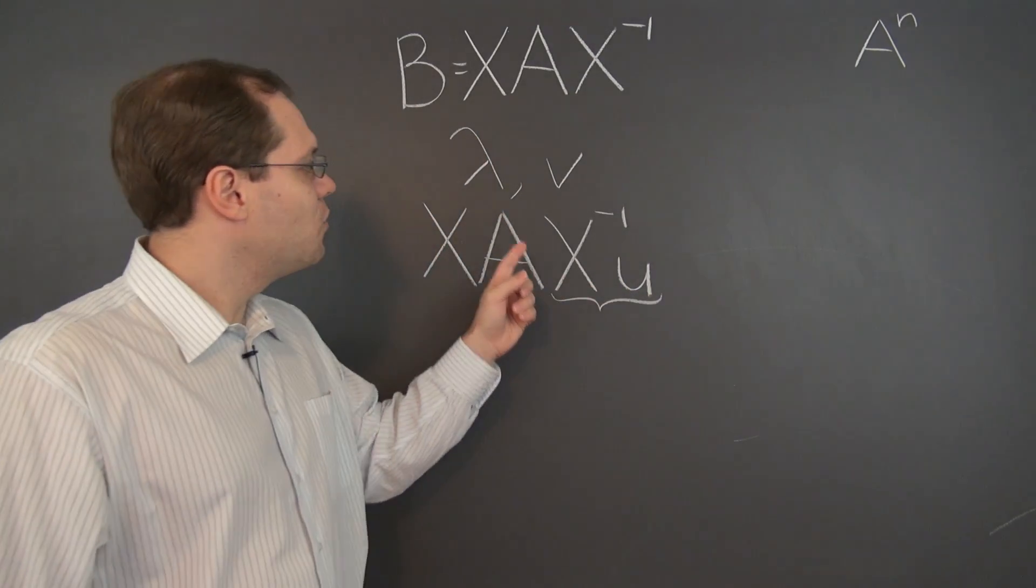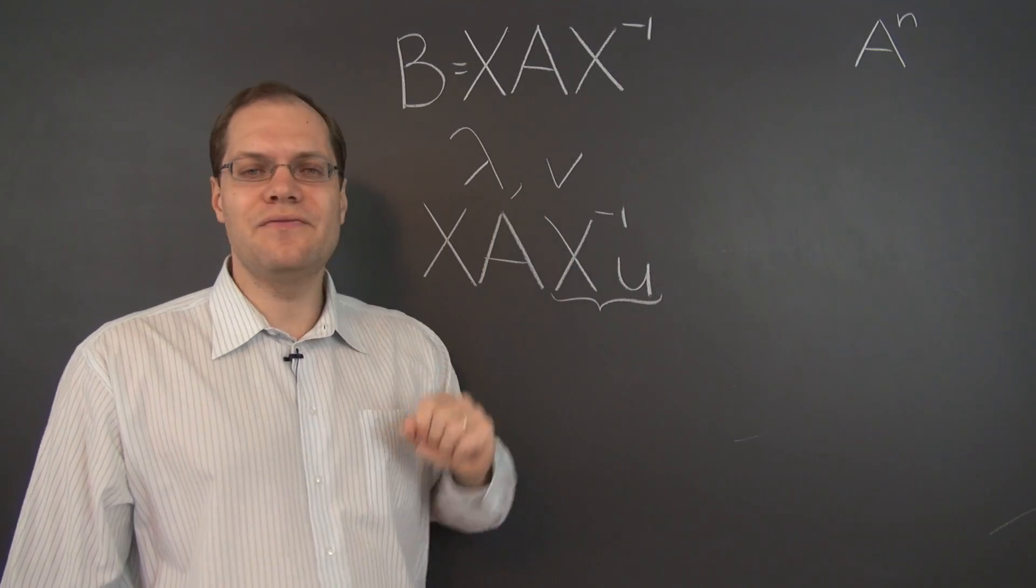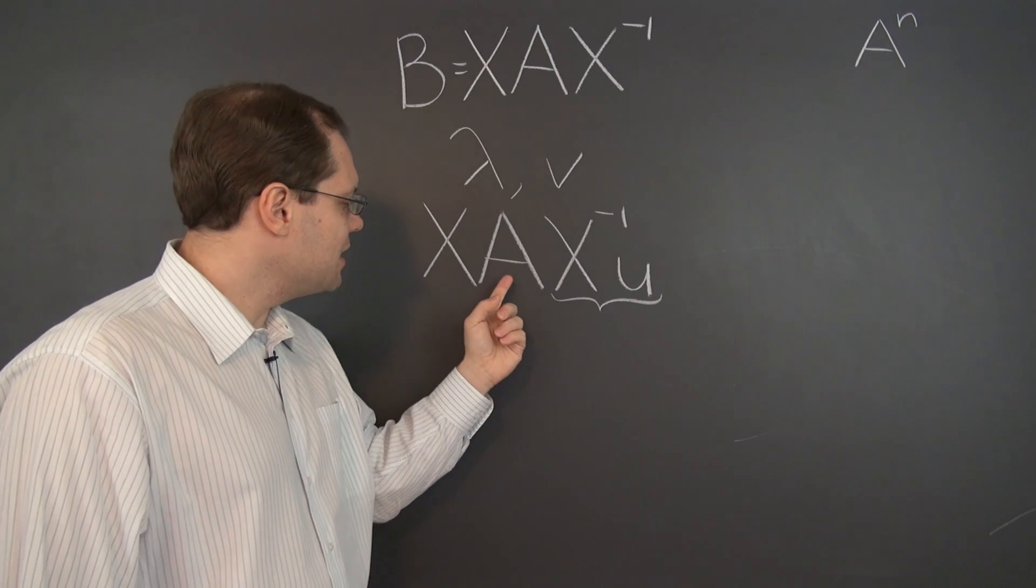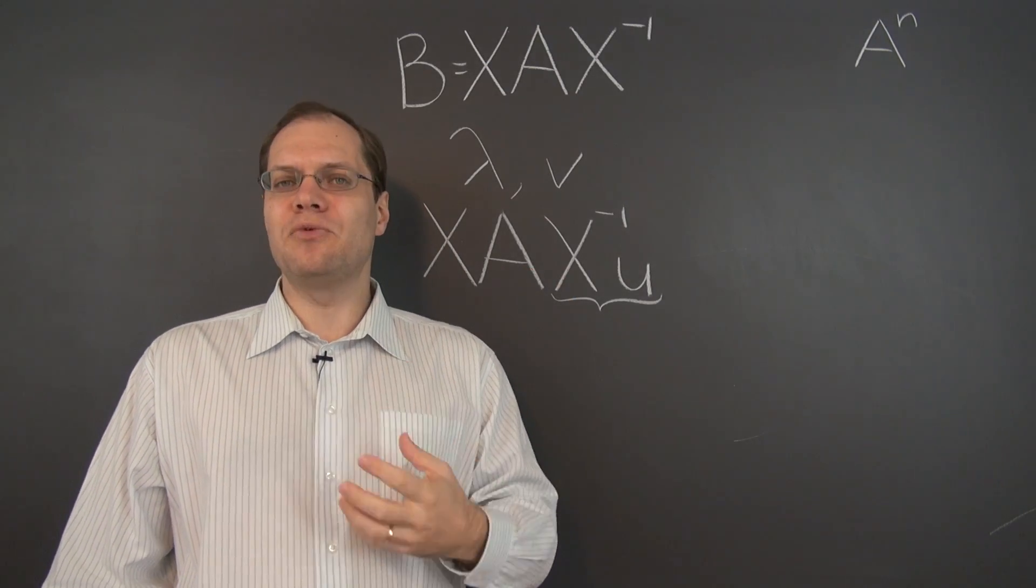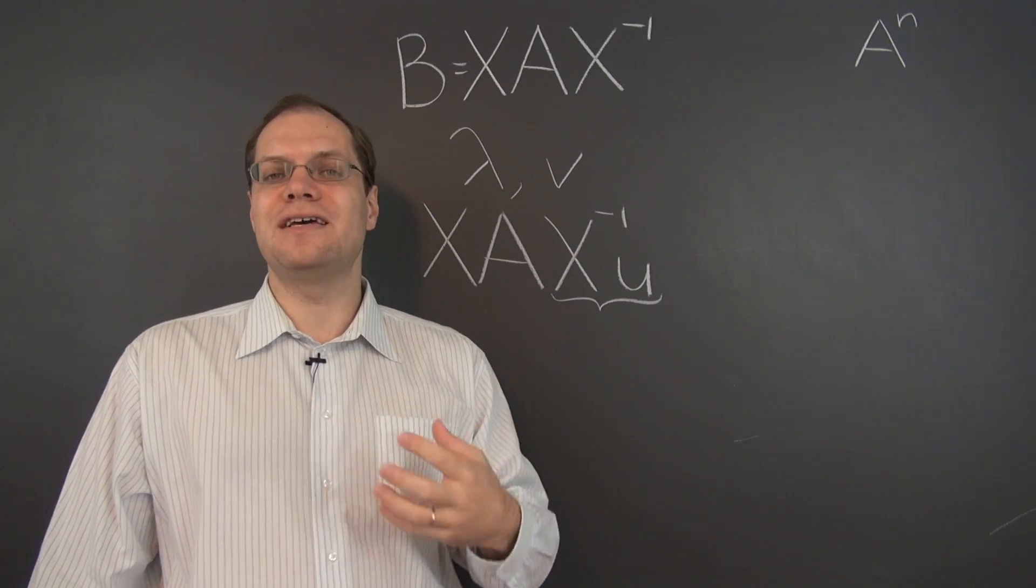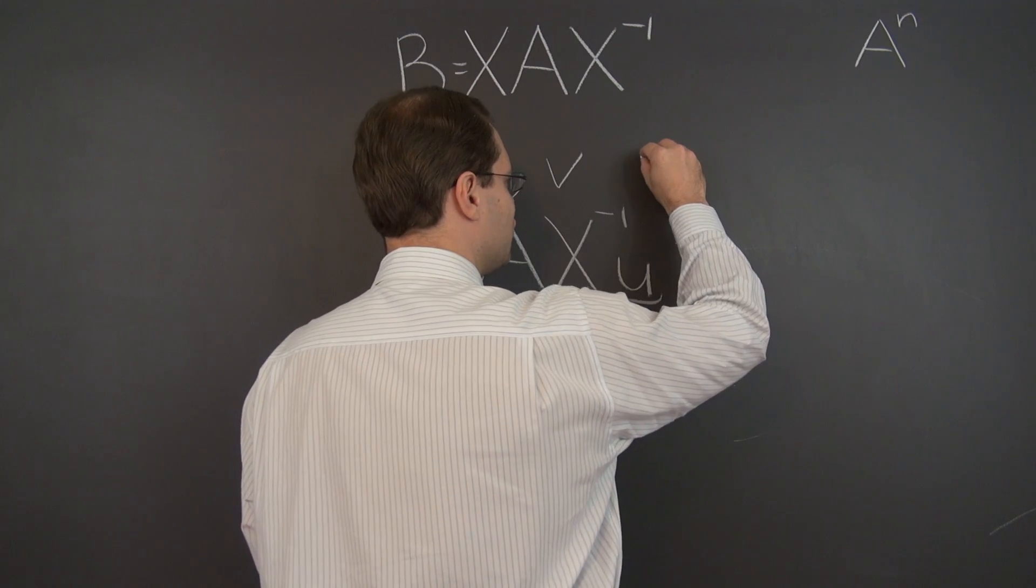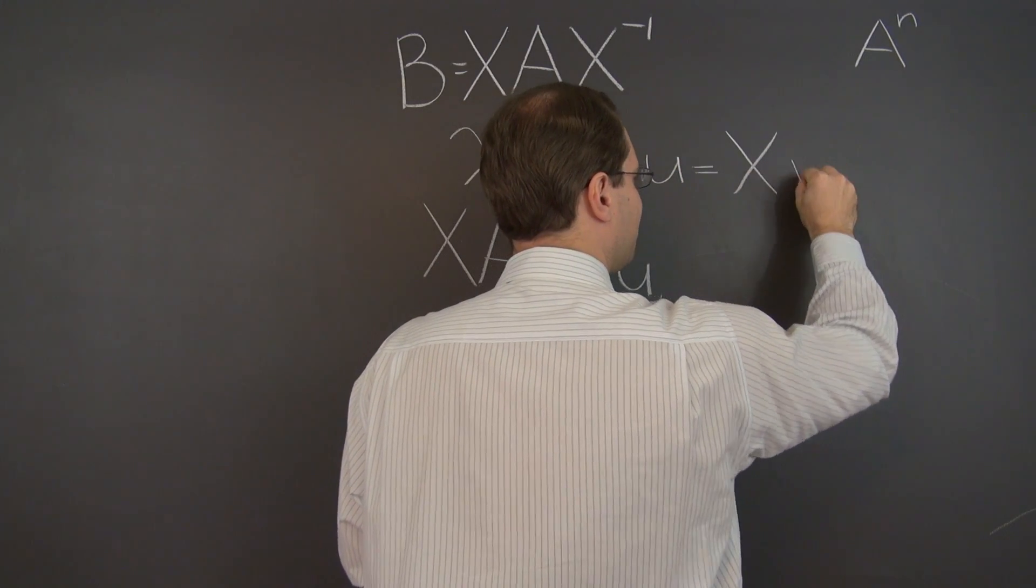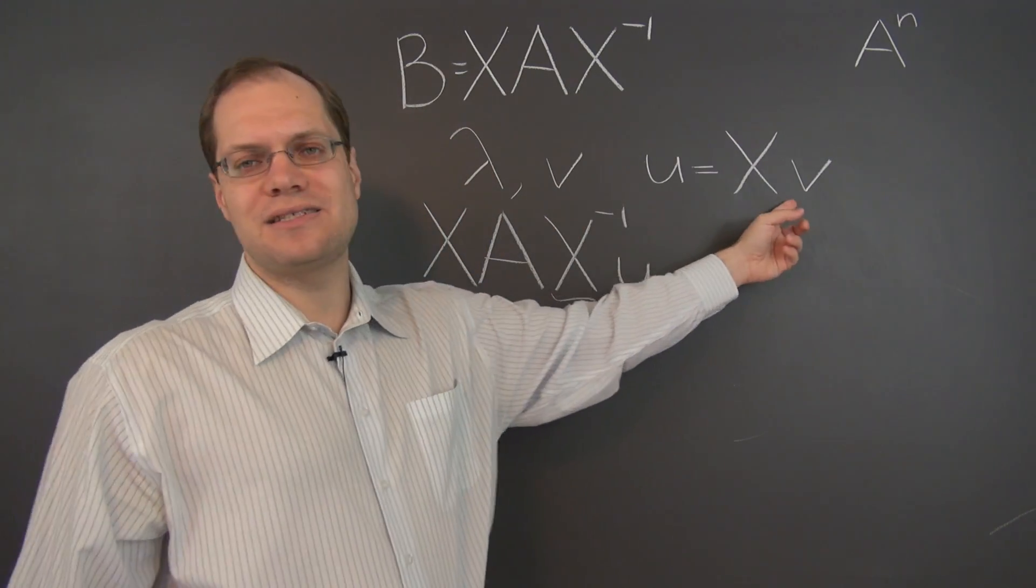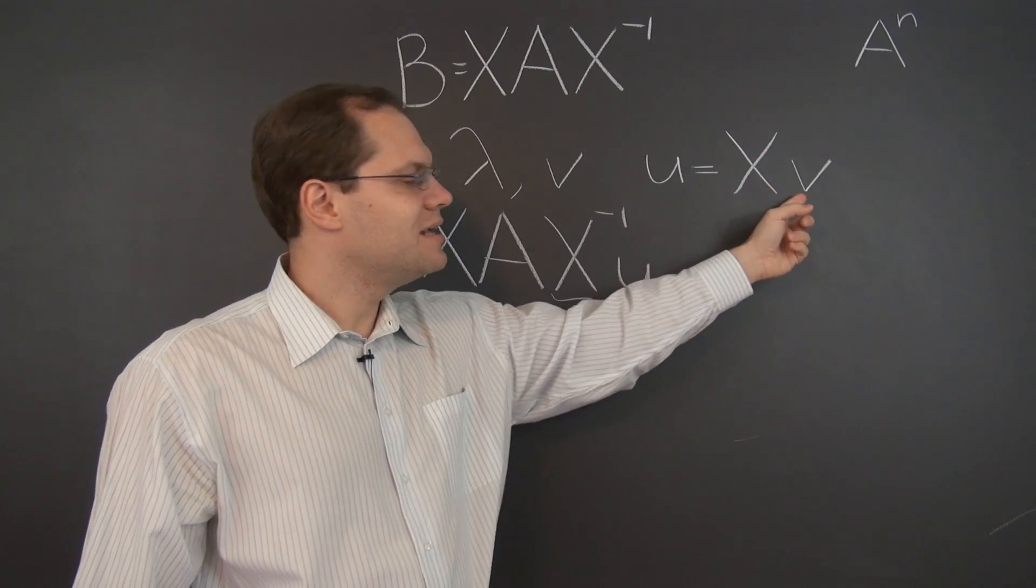Why is that? Well because I want to take advantage of my knowledge of eigenvalues and eigenvectors of the matrix A, and if A multiplies V, then I know that A V equals lambda V, which is taking advantage of the only thing I know about A. So I want U to equal X V. If U equals X V, then X inverse U, what we have here, is V.